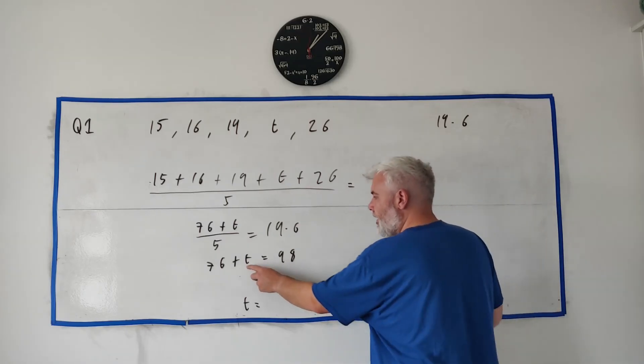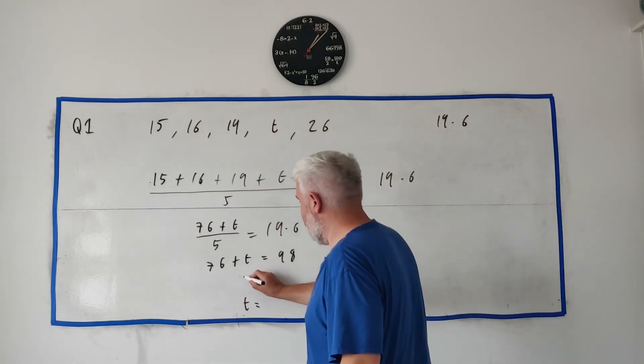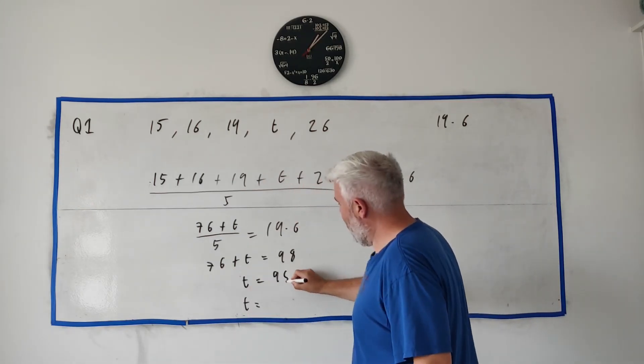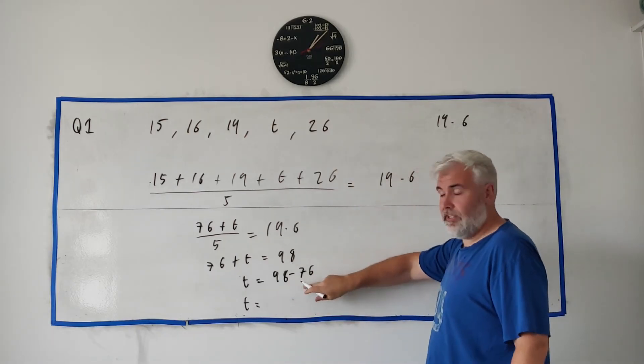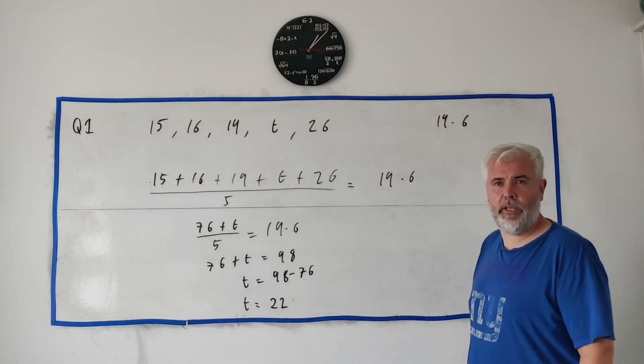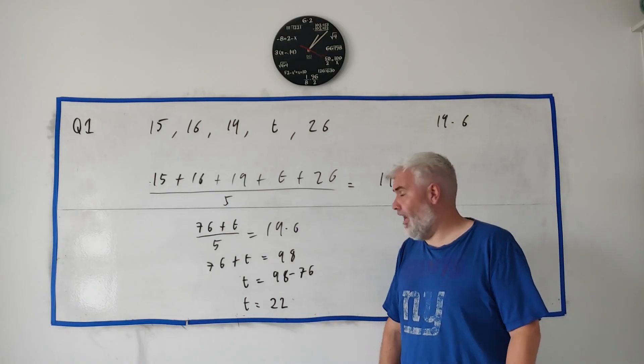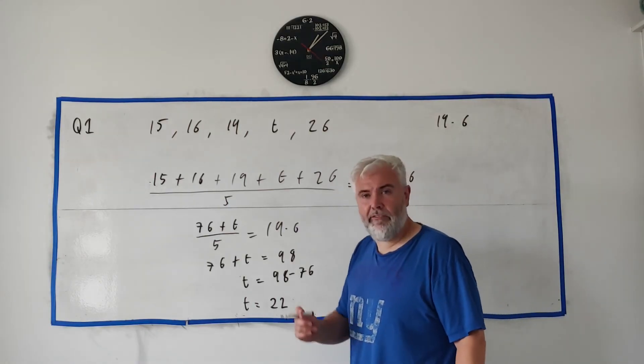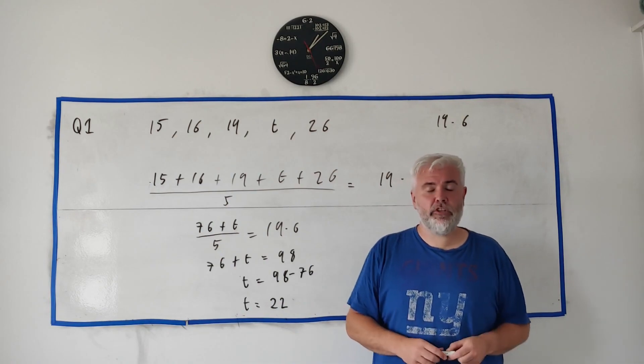And next thing to get T on its own, let's get rid of this 76. Let's take 76 from both sides. T is equal to 98 minus 76. 98 minus 76 is 22. And that's the answer for part B. And that's actually the answer to the last question in question one. So if you have any follow-up questions, let me know in the comments below. Until next time, have a good day.